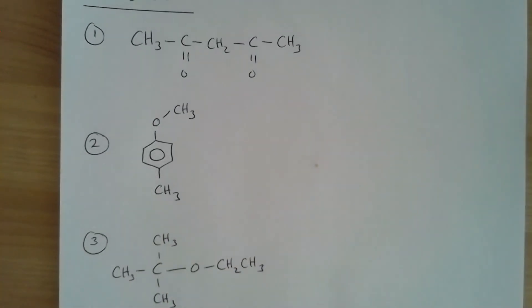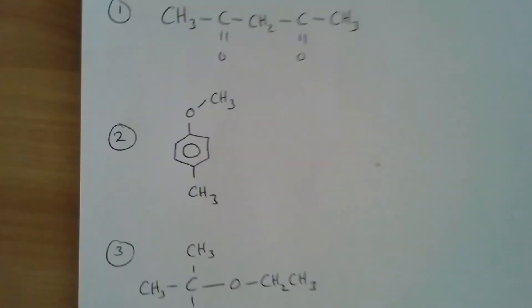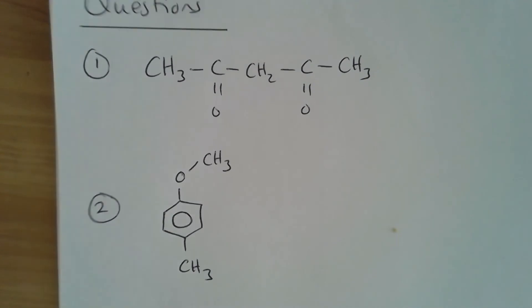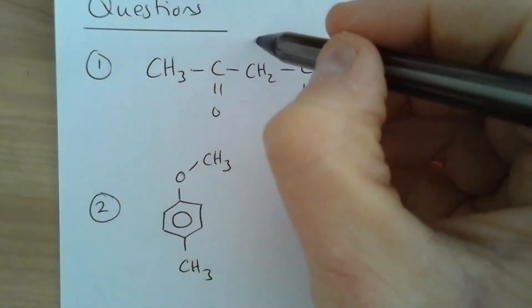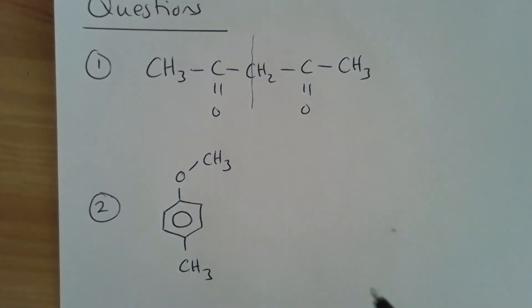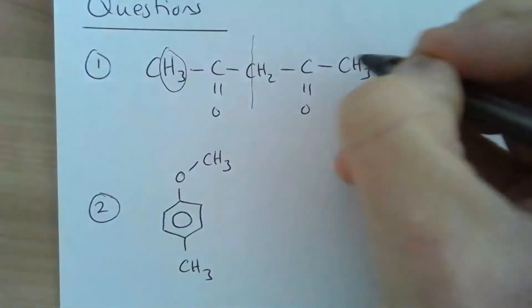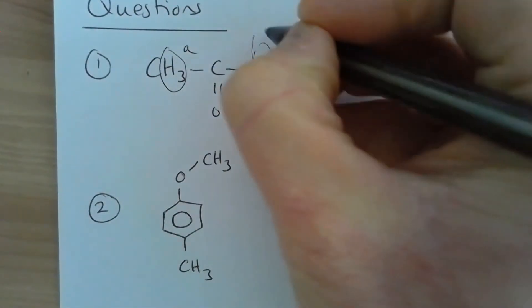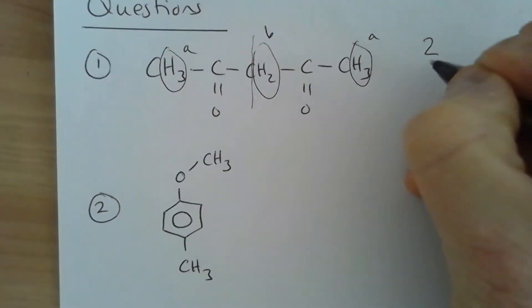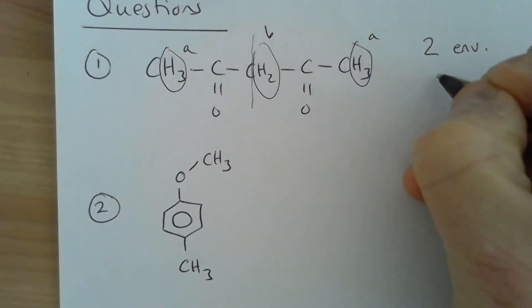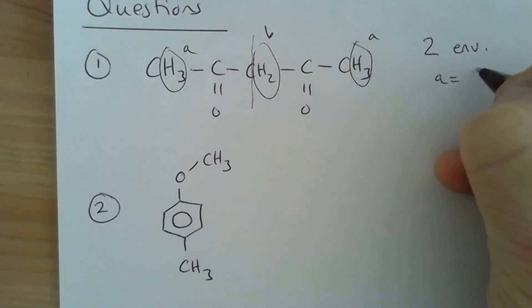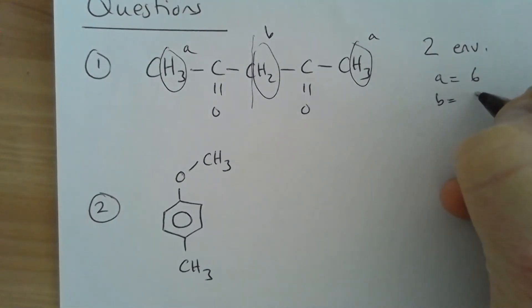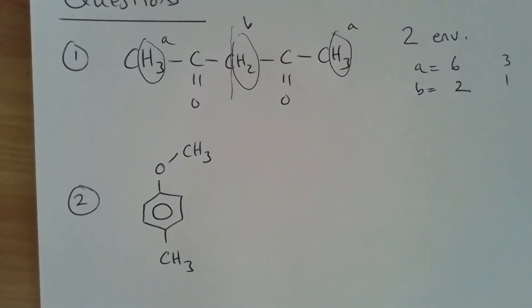Practice question one: there is a line of symmetry through the molecule, giving only two hydrogen environments. Environment A has an integral of six, and environment B has an integral of two, which gives a ratio of three to one.